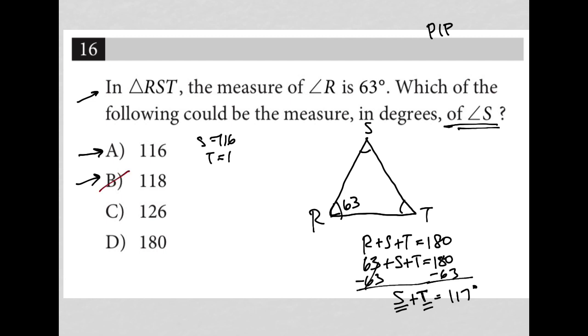And of course, anything above 117, or 116 really, can also not be true. So all these other options here must be false. So that's the reason why choice A is the best answer.